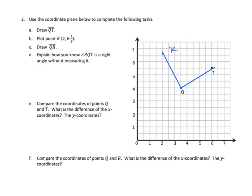Now that we've drawn that, we have to explain how we know that angle RQT is a right angle, and that would be this angle right here, RQT. How do we know it's a right angle? Well, again, we can draw some triangles here.